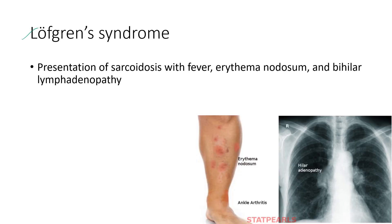Next is Löfgren syndrome. It is a presentation of sarcoidosis with fever, erythema nodosum, and bilateral hilar lymphadenopathy. In these cases we have to rule out uveitis. This picture shows erythema nodosum and an X-ray of bilateral hilar lymphadenopathy.